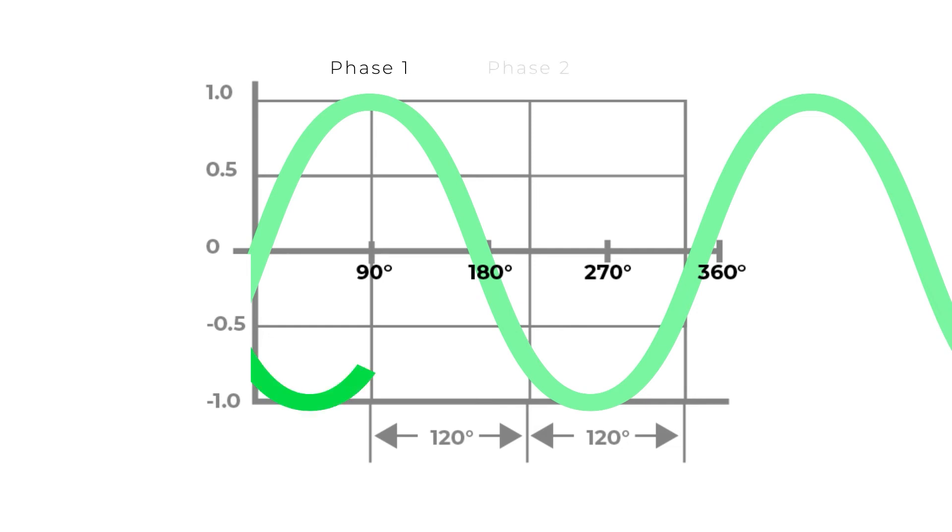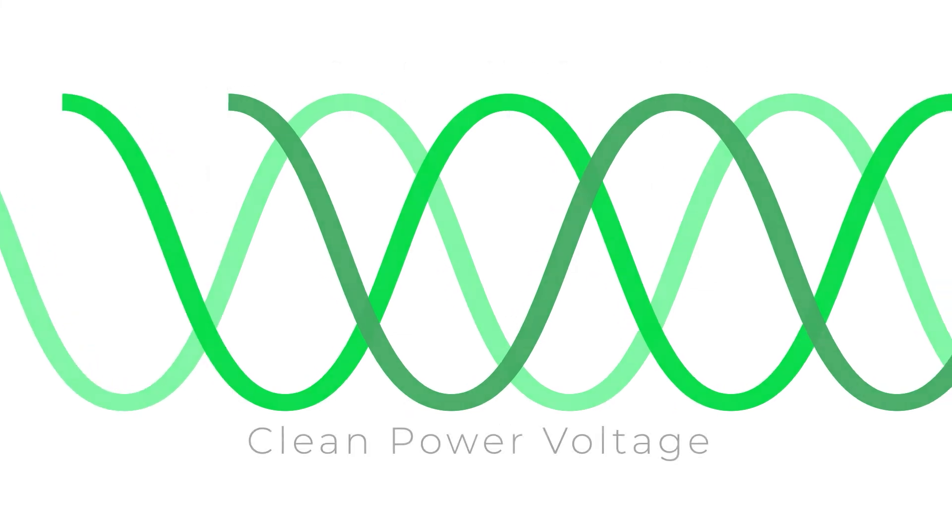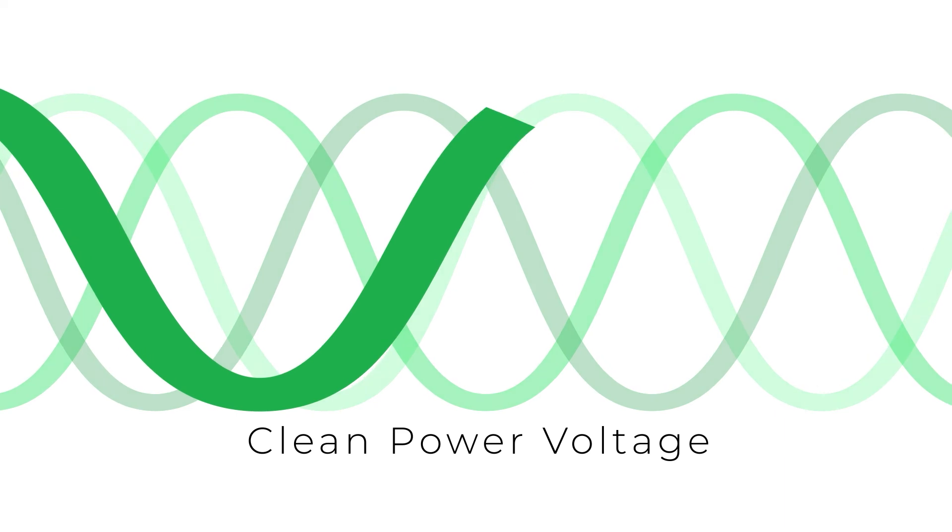A three-phase clean power VFD produces three smooth sinusoidal waves which at any point average a sum of zero. This creates an optimal scenario with zero common mode overvoltage.